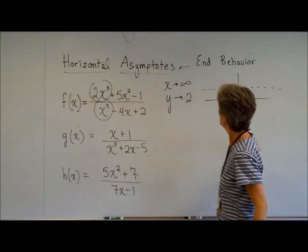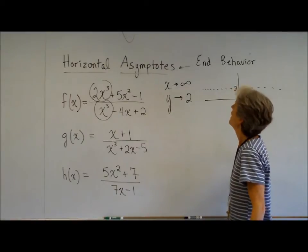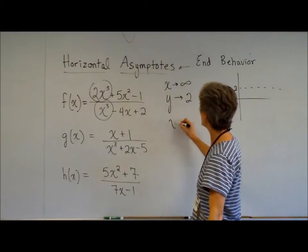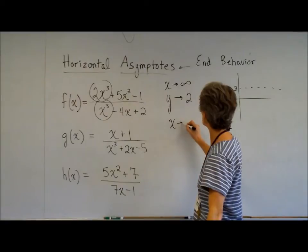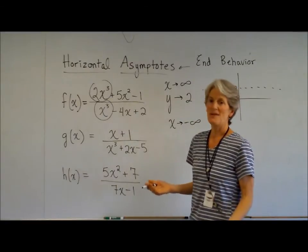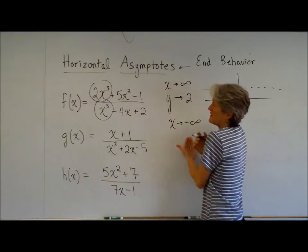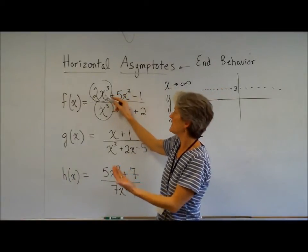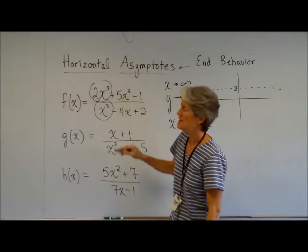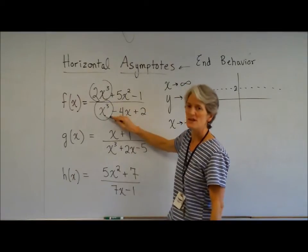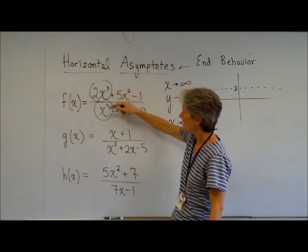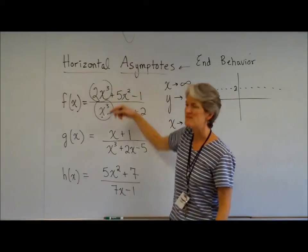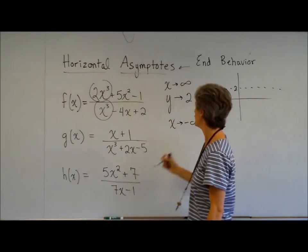You didn't put X goes to negative infinity, but that's also going to be 2, isn't it? Thank you so much. Absolutely. End behavior, of course, has to do with negative infinity too. If I plug in a negative billion and cube it, multiply by 2, divided by negative a billion cubed — negative a billion cubed divided by negative a billion cubed — that's going to approach 2 as well.